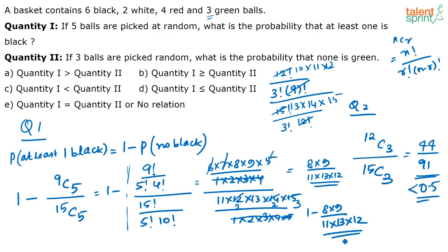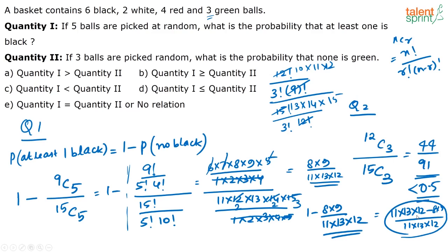Now looking at Quantity 1: 1 minus 8 × 9 divided by 11 × 13 × 12 — the denominator is a very large number, so taking the LCM gives (11 × 13 × 12 minus 8 × 9) divided by (11 × 13 × 12). This answer is definitely greater than 0.5. So Quantity 1 is definitely greater than Quantity 2, and you can take the answer as option A.